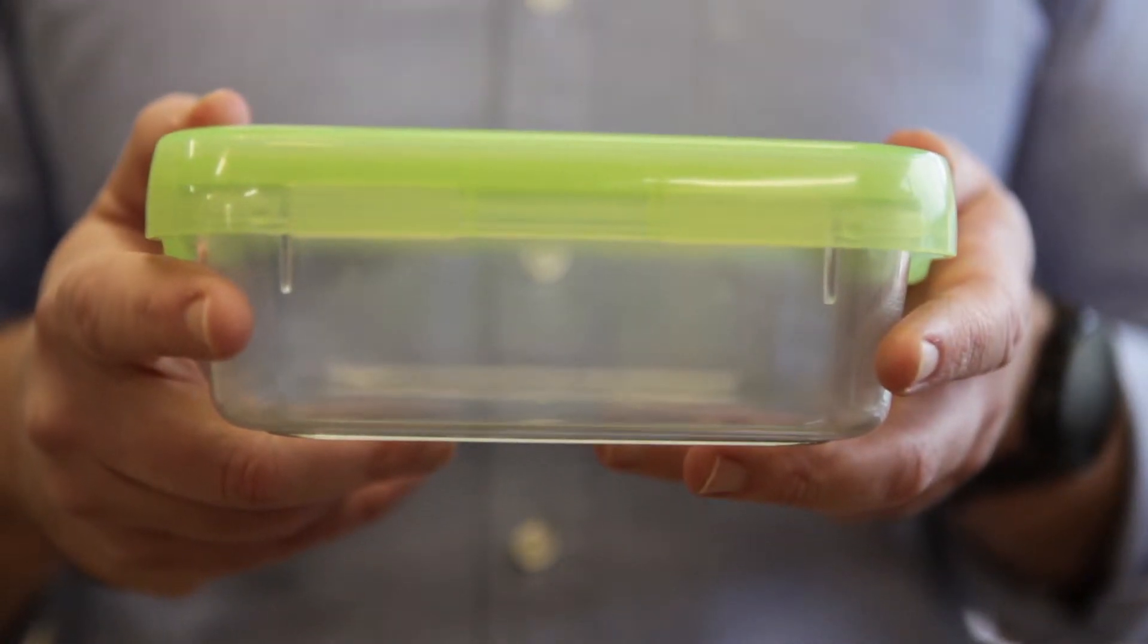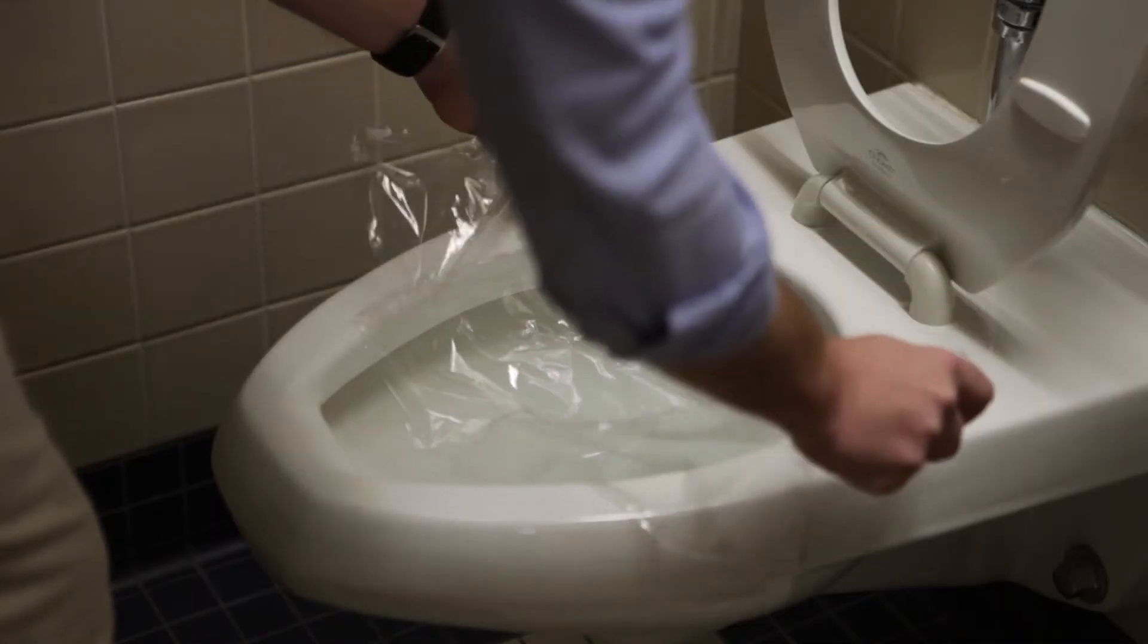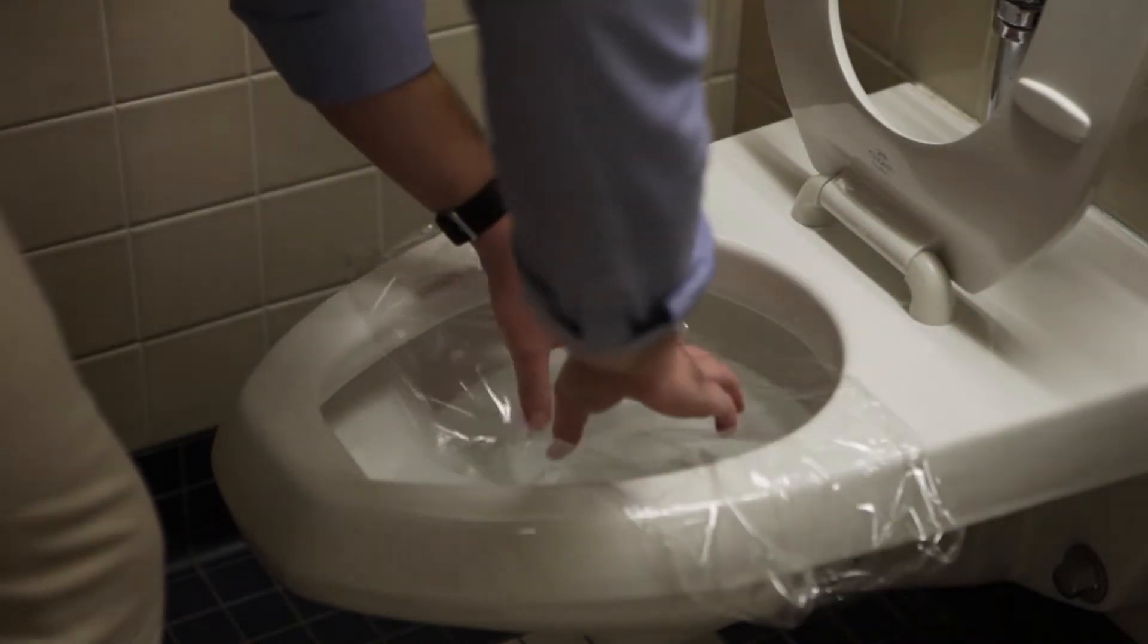There are two easy options for collecting the sample. You can collect your stool in a clean, dry container like this, or you can put a piece of plastic wrap over the toilet.